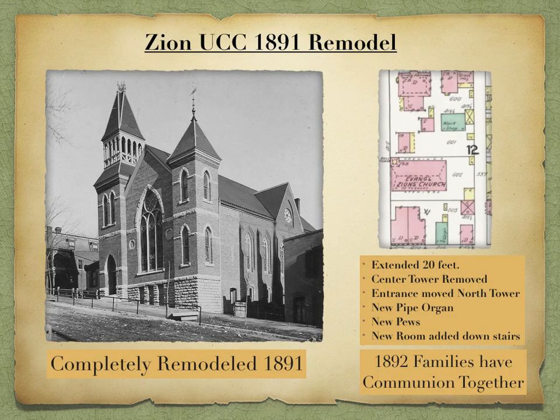Because of this growth, the church parishioners decided to remodel the church in 1891. They removed the original tower, the entrance moved to the north tower, and they got a new pipe organ, new pews, and a new room added downstairs. In 1891, families were not allowed to sit together — women and men had to split on opposite sides of the sanctuary, and therefore they took communion separately.